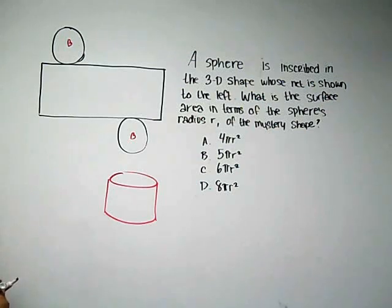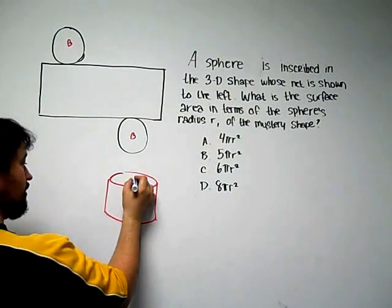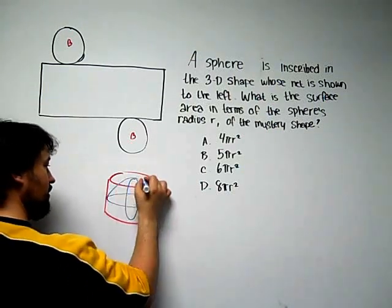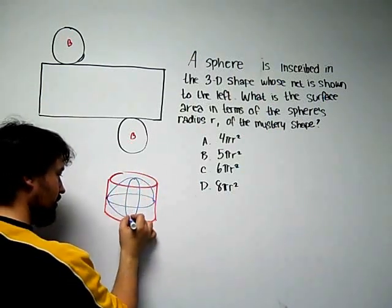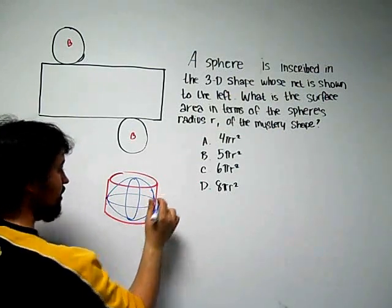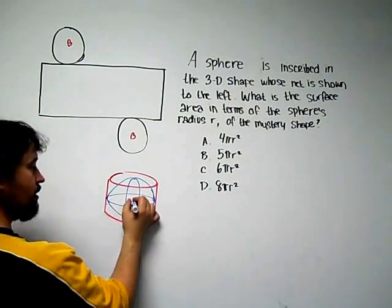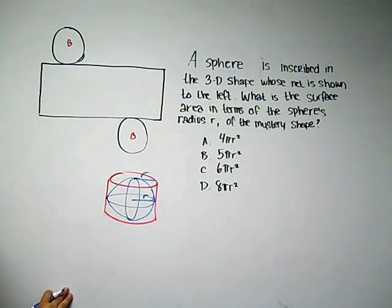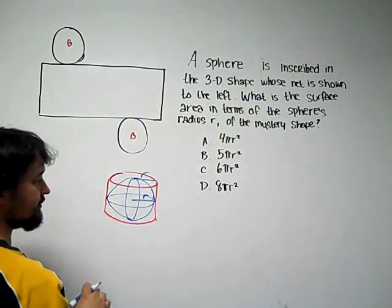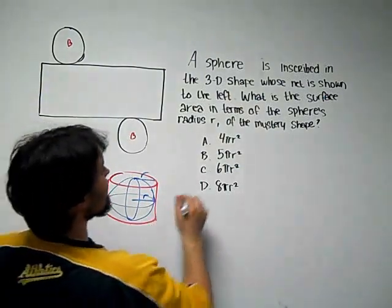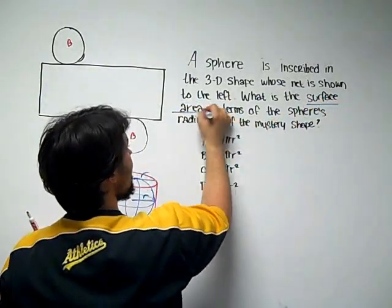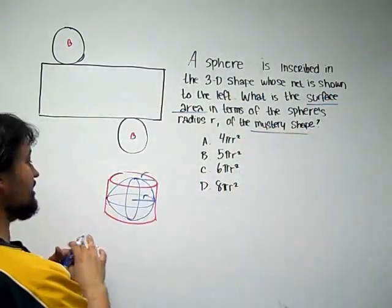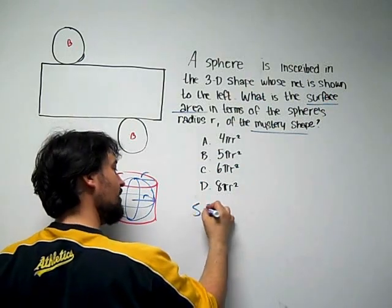We're going to put a ball inside of that. Now, what we see is the radius here is the same as the radius of the cylinder. To digress for a sec, we need to find the surface area of the mystery shape. So, what the question is really saying is, what's the surface area of the cylinder?